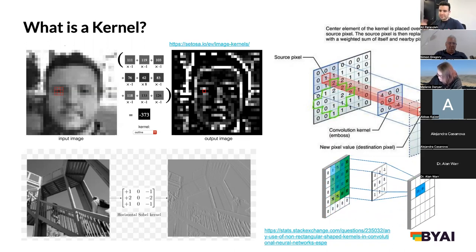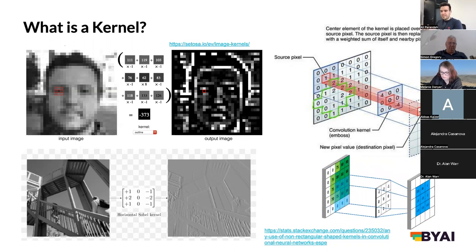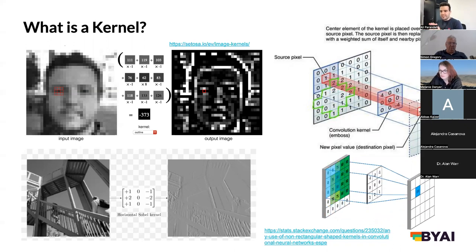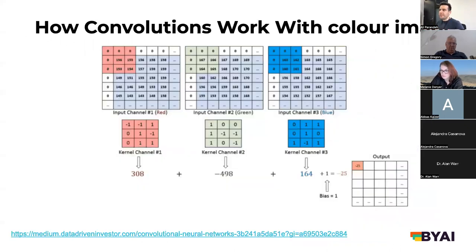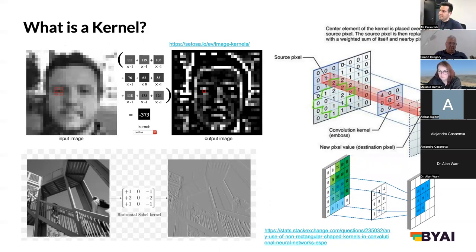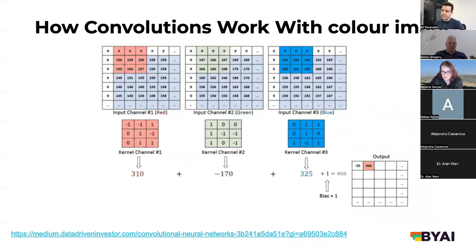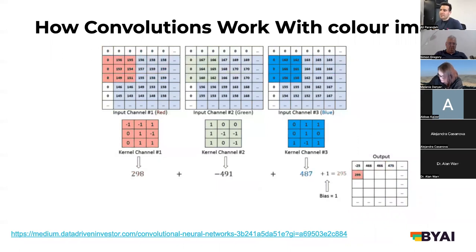This is a different way of thinking about neural networks — they use convolutions, which is why we call them convolutional neural networks. Each layer basically convolves the image to create more filtered images as you go through it. That's just for one color channel. With multiple color channels in colored images, a kernel filter slides across the image for each color channel, and you add up all the numbers to create your output channel.